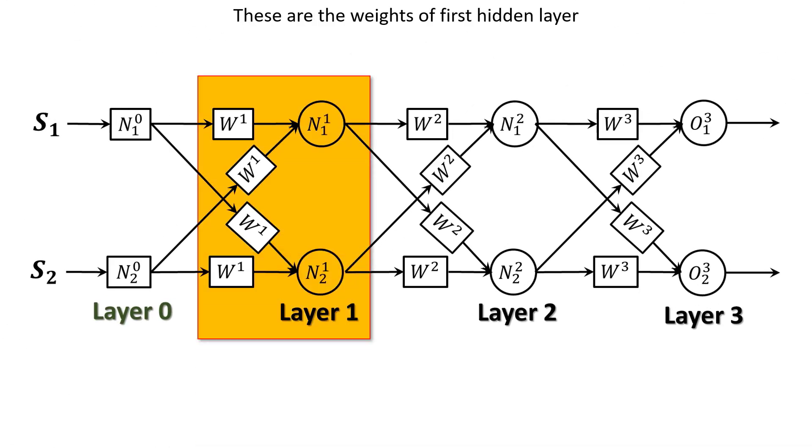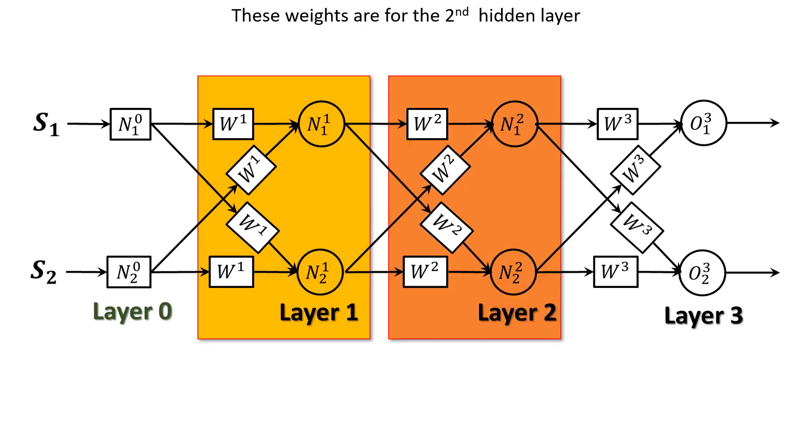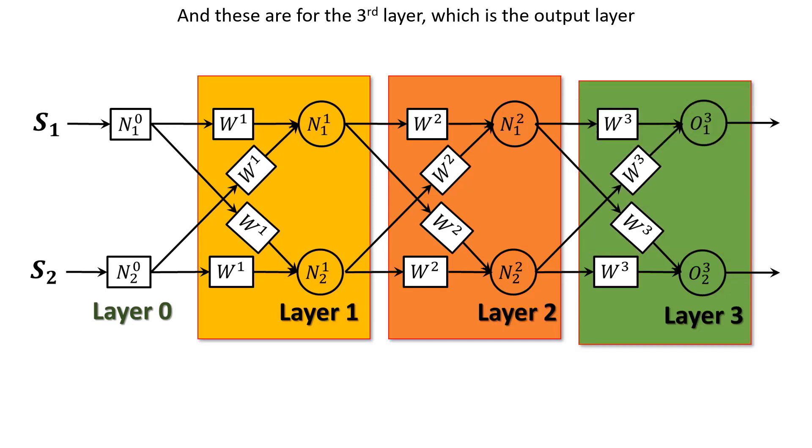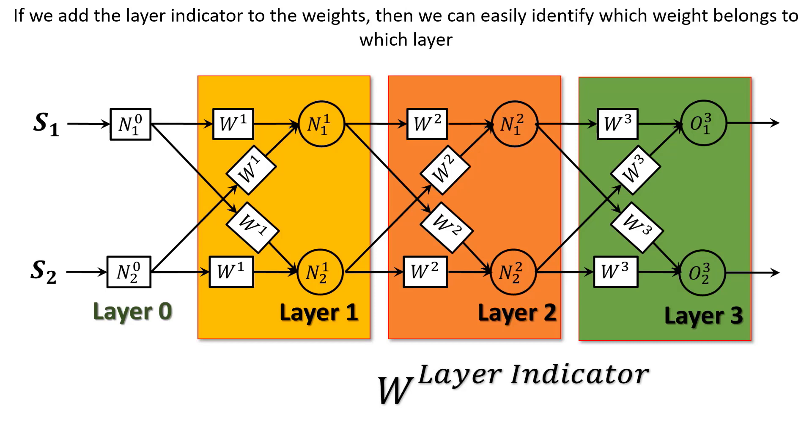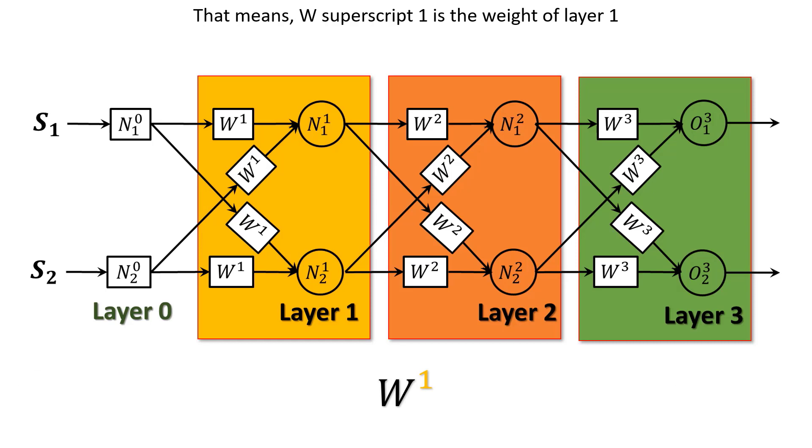Let's assign some notation to the weights to mark which weight belongs to which node. These are the weights of first hidden layer. These weights are for second hidden layer. And these are for the third layer which is the output layer. If we add the layer indicator to weights, then we can easily identify which weight belongs to which layer. That means W superscript 1 is the weight of layer 1, W superscript 2 is the weight of layer 2, W superscript 3 is the weight of layer 3, and in general, W superscript L is the weight of layer L.